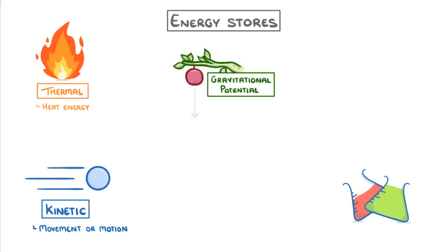Gravitational potential energy, which is the energy that an object possesses because of its position in a gravitational field. Elastic potential energy, such as the energy held in an already stretched spring.